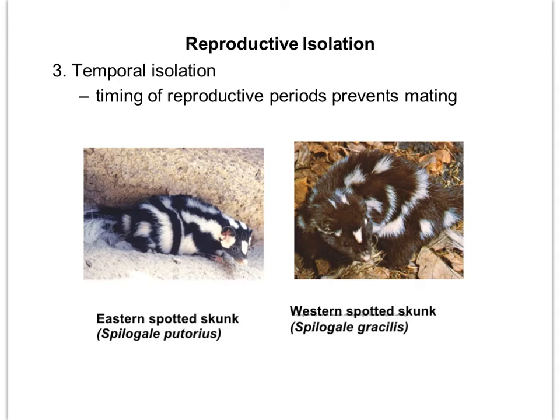The third type of reproductive isolation is temporal isolation. This has to do with the timing of the reproductive periods preventing mating from happening. Looking at two types of skunk — same genus but separate species — one prefers to mate in the fall and one prefers to mate in the spring, so neither wants to mate with the other due to that timing being off.